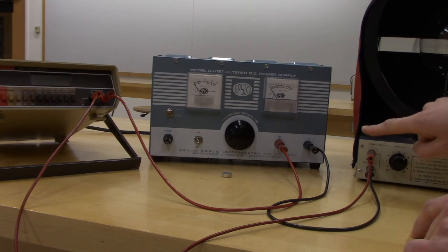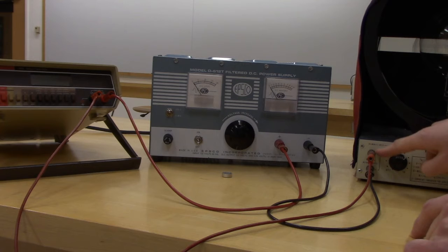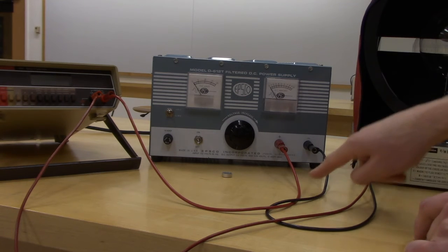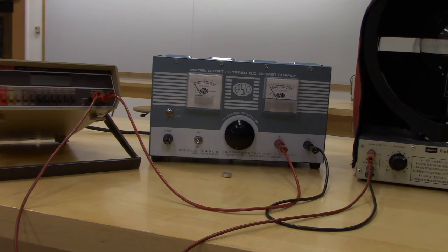The current will pass through the multimeter, come back out, follow this wire into the positive side, which will then come out the negative side and then back into the power supply.